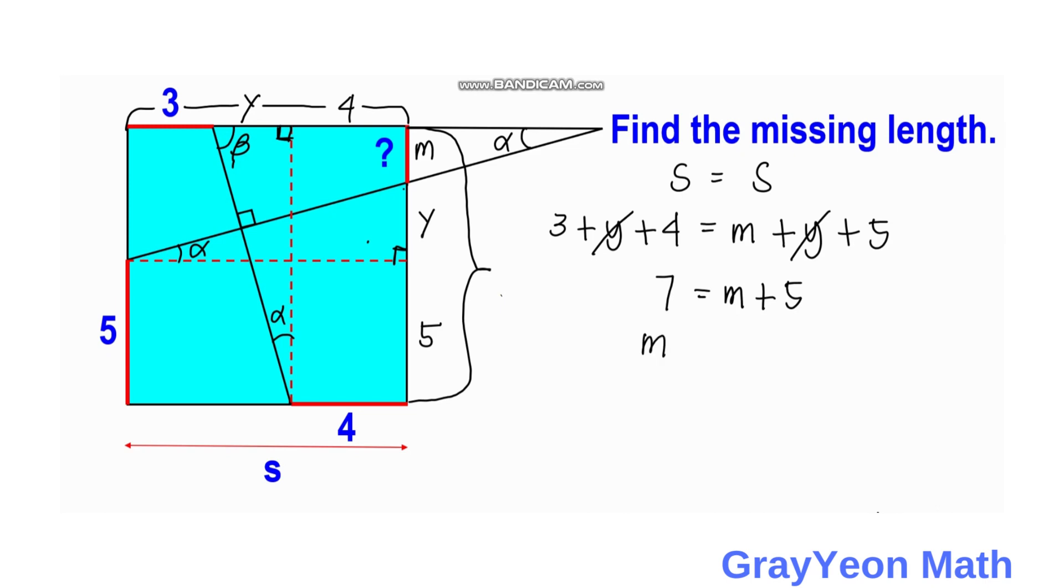And therefore M is equal to 7 minus 5, where M is equal to 2.